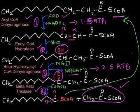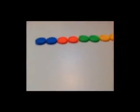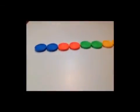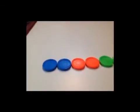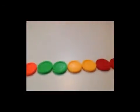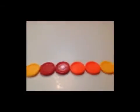To demonstrate beta oxidation visually, I have a model using colored pons — 16 in total, arranged in pairs of different colors in a line, representing a 16-carbon fatty acid.